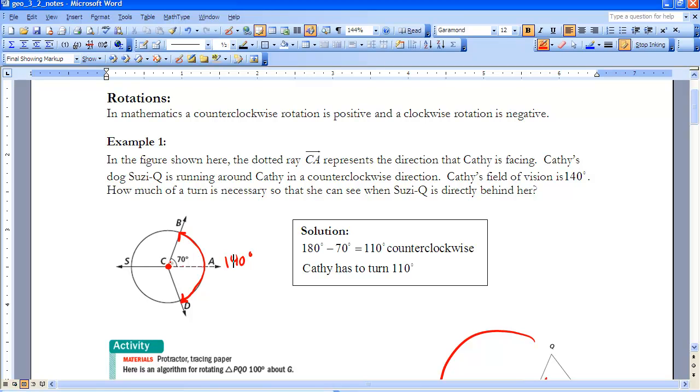Now, her dog is running counterclockwise. And we'll just use A from looking ahead. Point A is where Cathy's looking straight ahead. And her dog is running counterclockwise around her. And the dog, Susie Q, stops right directly behind Cathy.